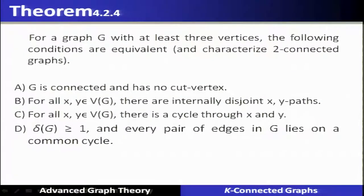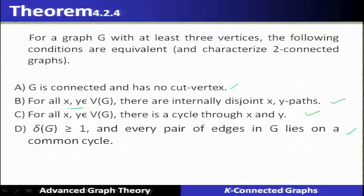Now we will see the theorem that characterizes two-connected graphs. For a graph G with at least three vertices, the following conditions are equivalent: (A) G is connected and has no cut vertex; (B) for all x, y pairs of vertices, there are internally disjoint x-y paths; (C) for all x, y pairs of vertices, there is a cycle which passes through x and y; (D) the minimum degree delta(G) is greater than or equal to 1 and every pair of edges in G lies on a common cycle.